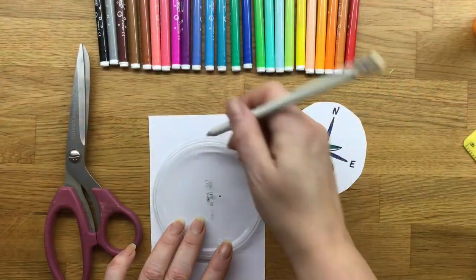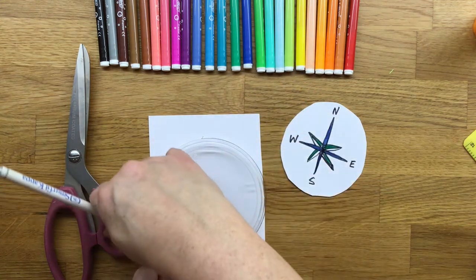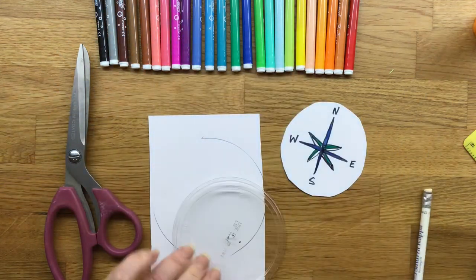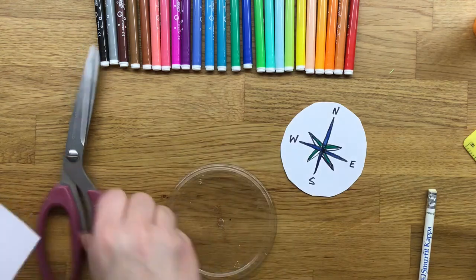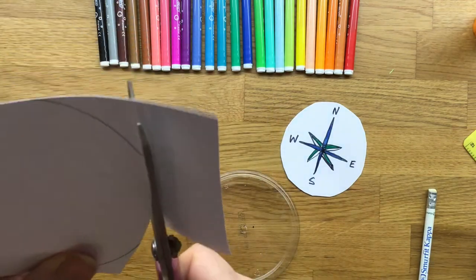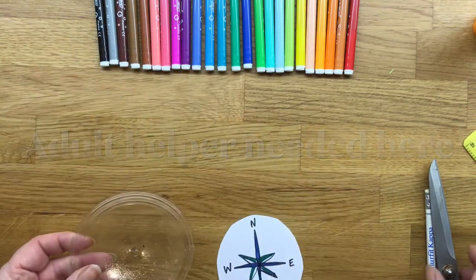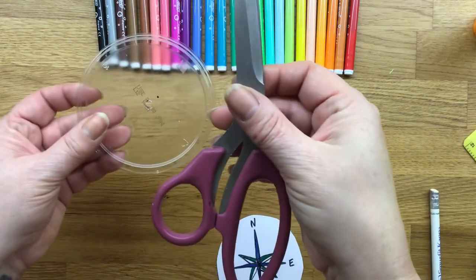Next we have to make the compass lid to go in our plastic pot top. Draw around the top with a pencil and cut round the circle. You'll need to draw the compass points onto your disc so mark it at north, south, east, west.